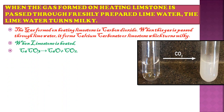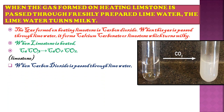When limestone is heated, the reaction is: CaCO₃ (calcium carbonate) converts into calcium oxide (CaO) plus carbon dioxide. So here the carbon dioxide is forming. When carbon dioxide is passed through lime water, which is a solution of calcium hydroxide Ca(OH)₂, what happens is calcium carbonate forms.